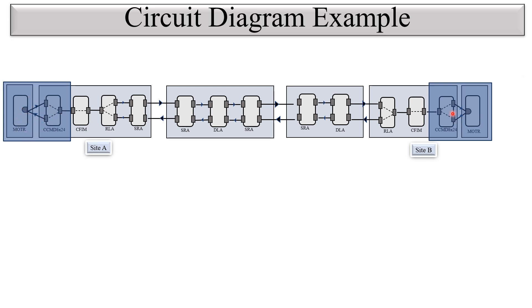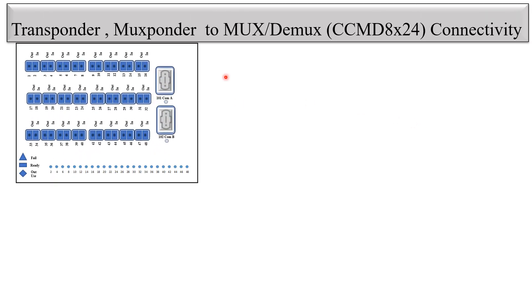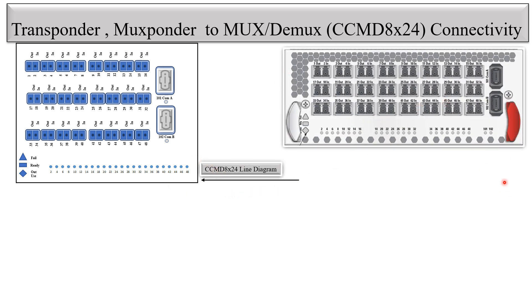Here you can see the CCMD8 Cross 24 view. As the name suggests, 24 channels can be connected and it supports multiple directions. In the physical diagram, port number one is the output port and port number two is the input port. For a single channel, two ports are involved — port one is out and port two is in. For lambda one, it goes out from port number one and comes in via port number two. There are 48 ports total, supporting 24 lambdas.